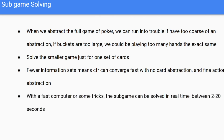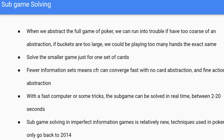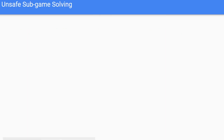Even with a fast computer or some algorithmic tricks, we can solve this in real time, potentially under 20 seconds. Subgame solving for imperfect information games is a pretty new thing — techniques go back to about 2014, so relatively new.